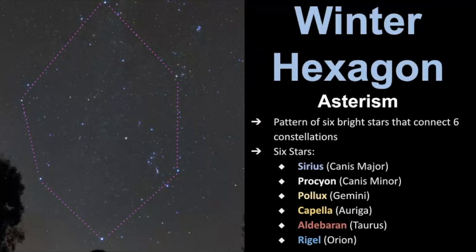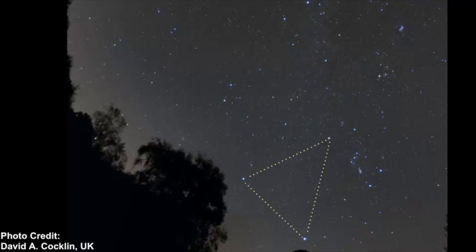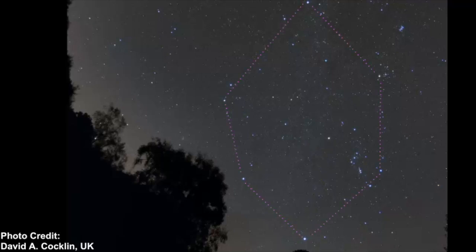Let's get some practice identifying both the winter triangle and the hexagon. Looking at this original photo — which we saw at the very beginning — try to find the winter triangle. This is an ideal picture, as we don't always have really dark skies like this. Here is where the winter triangle is — notice it connects Orion, Canis Major, and Canis Minor. The winter hexagon is much bigger; it covers the area of six different constellations instead of only three, and if we superimpose them on each other, you can see that the triangle sits within the hexagon.